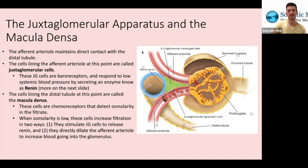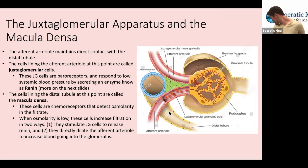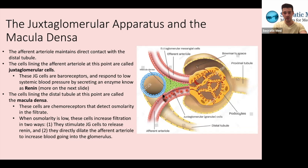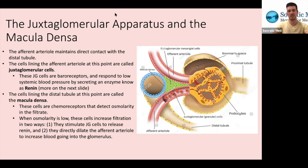The afferent arteriole maintains direct contact with the distal tubule. If you look over here, we have the afferent arteriole on the bottom — this red vessel. The distal tubule is right over here. The cells lining the afferent arteriole at this point are called the juxtaglomerular cells — you can see these little red epithelial-like cells. The green mesh, the extraglomerular mesangial cells, I wouldn't pay attention to those; they're probably out of scope for the MCAT.